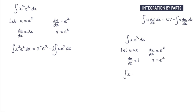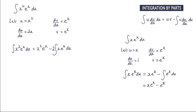So we have the integral of x e to the x dx is equal to u times v — so that's x e to the x — minus the integral of v du by dx, which is just e to the x with respect to x. So we have x e to the x minus e to the x.